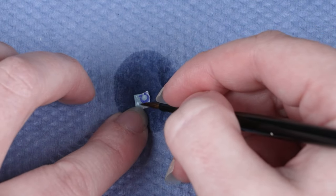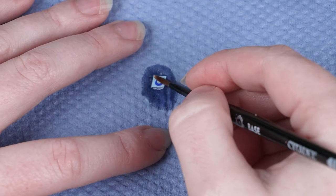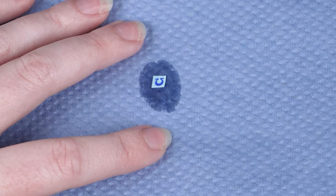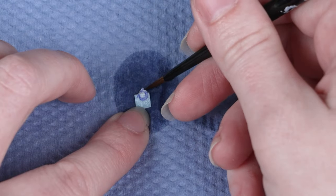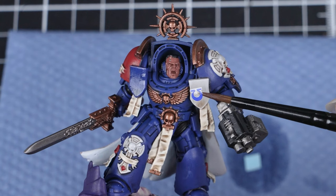Now this part can be a little bit fiddly, so just take your time. If you think the transfer is drying out, don't panic, just add some more water to it. While ever it's wet we can move it around on the miniature. All we need to do is carefully slide the transfer onto our brush and then place it onto the miniature.